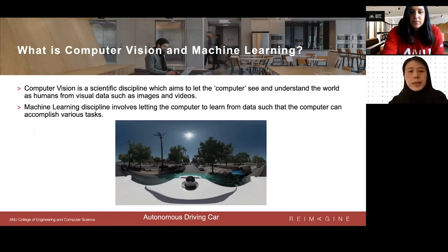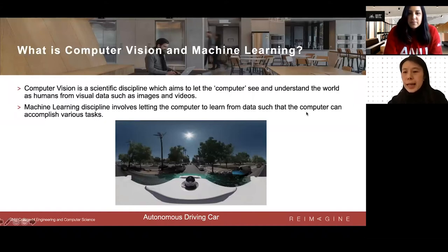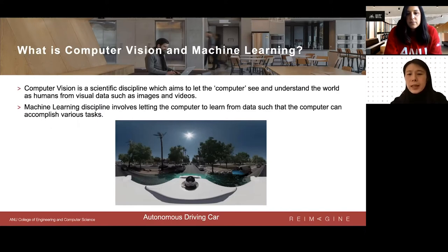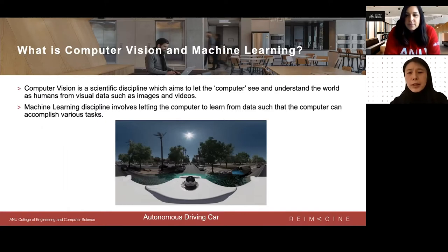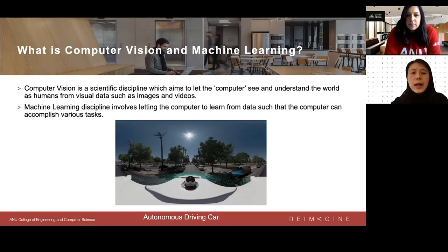So what is computer vision? Computer vision is a scientific discipline which aims to let the computer see and understand the world as humans do, from data such as images and videos. Machine learning involves letting the computer learn from data so that it can accomplish various tasks. The goal of both fields is to develop algorithms so the computer can see and understand the world as humans do.